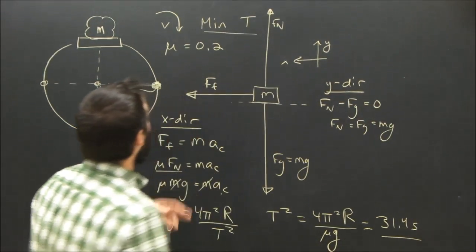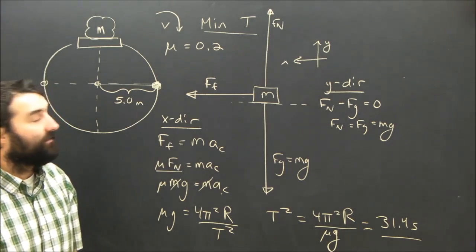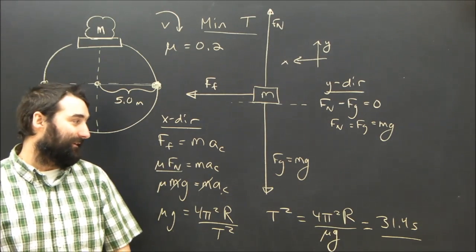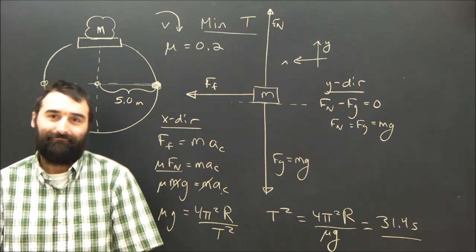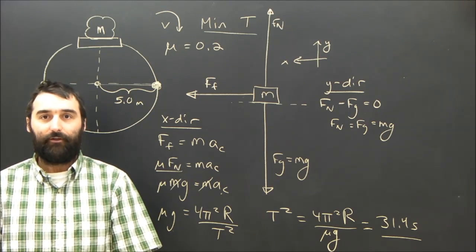And I guess to be technical, I only gave you one sig fig on my mu, so on the test I would have to call this 3 times 10 to the 1 seconds, but 31.4 is fine for here.